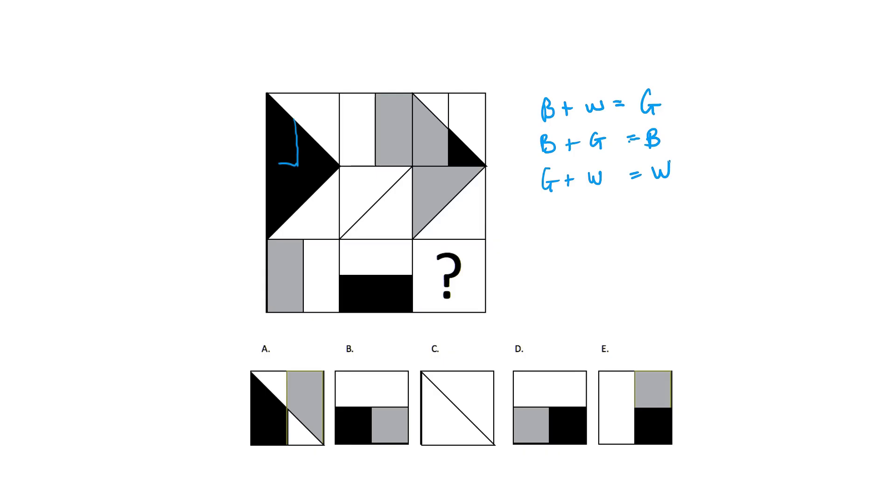If we head down to our bottom row we can see in the top left corner we will have grey plus white. Using our code this will equal white. So automatically we can rule out A as some of the top left corner is black.